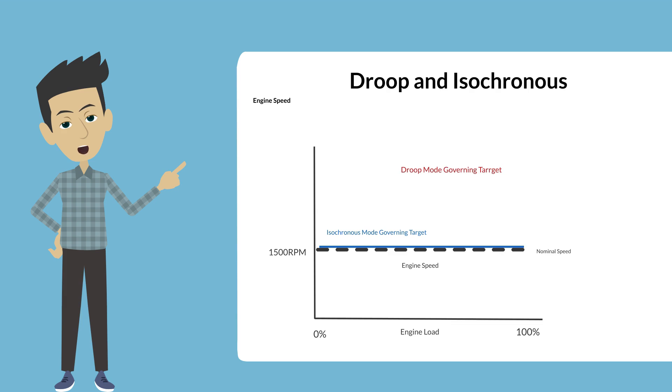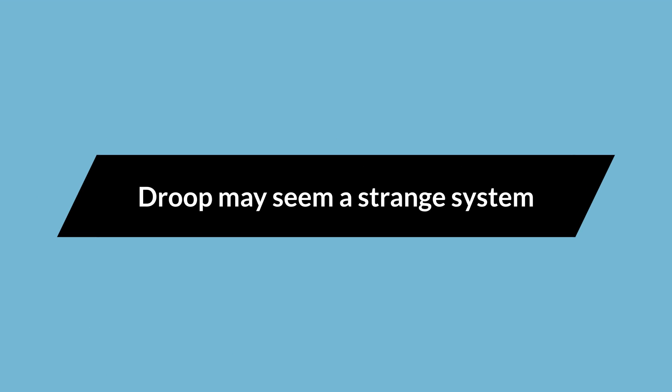In droop mode, the governor only targets to be at the nominal 1500 rpm speed at full load. At no load, the speed will be typically 5% higher. As the load increases, the speed falls proportionally down to 1500 rpm as shown on this graph. Droop may seem like a strange system.